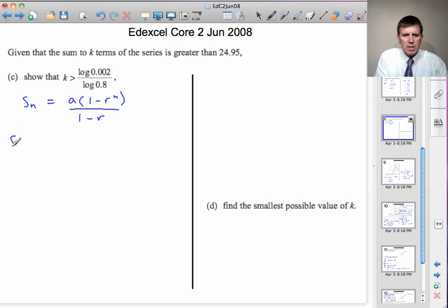Well, in this case, we're looking at S k, the sum of k terms. And it will be A, which is 5, multiplied by 1 minus R to the k, so that's 1 minus 0.8 to the power k, divided by 1 minus R, which is 1 minus 0.8.